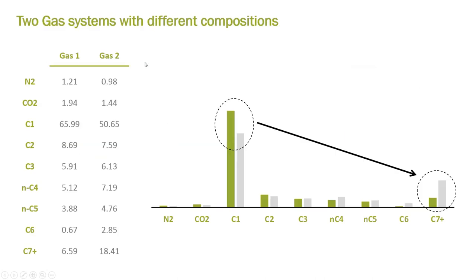In this case, we have two different gas compositions we want to understand, and we are going to model them in the software. As you can see in the bar chart, the C2 to C6 are pretty consistent between these two. The important difference is in the C1 portion and the C7+ portion. In gas one, we have less C1, and gas two has the same amount of C7+ buildup. We're going to understand why this difference creates really different modeling aspects in phase change, dropout, and total reservoir simulation.